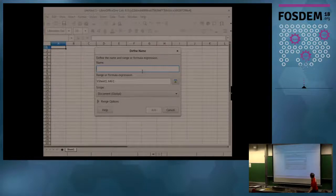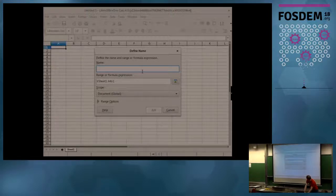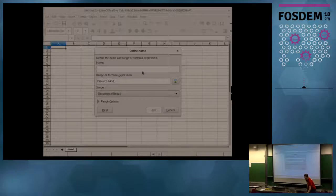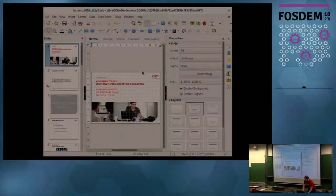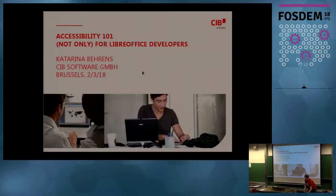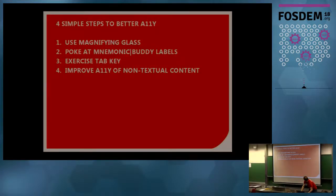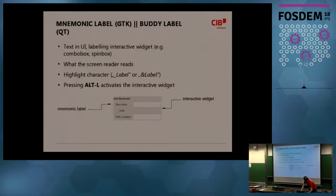Now I press Alt — if you can see that from behind — I'm getting those mnemonic characters highlighted in the menu. So if I press E, I get the second entry box highlighted. It's easy to do — just if you're hacking UI, check if this actually works.